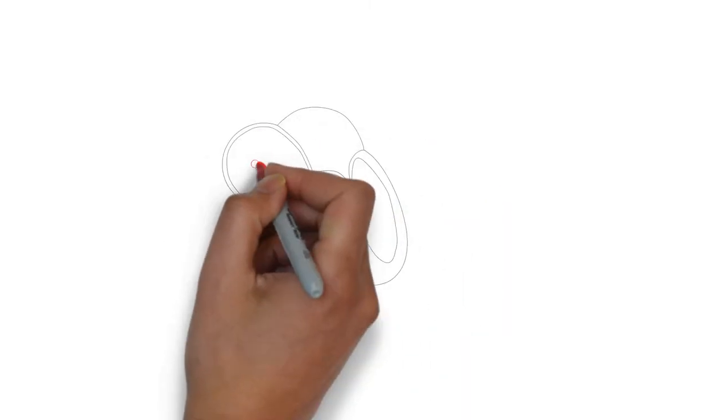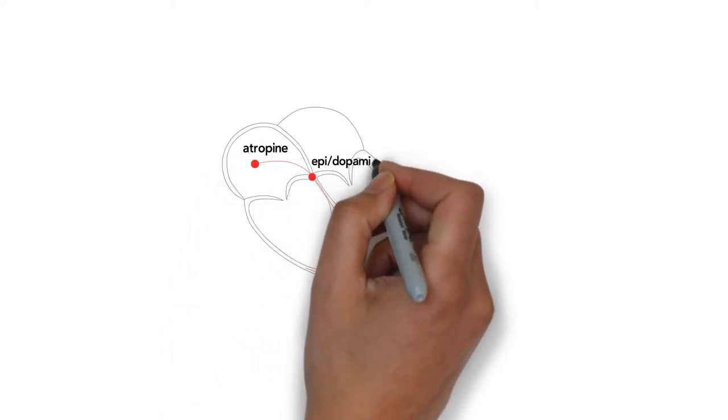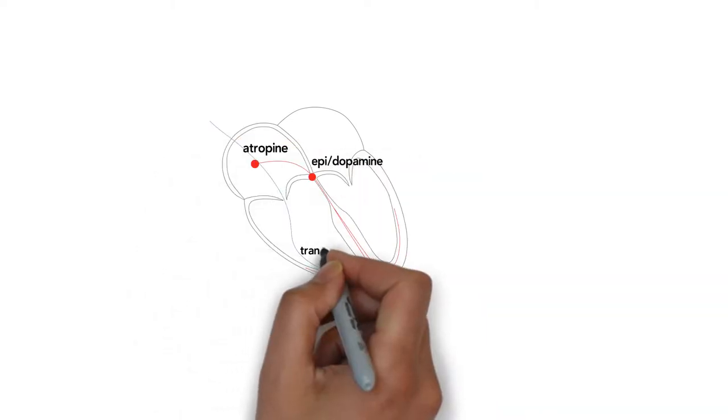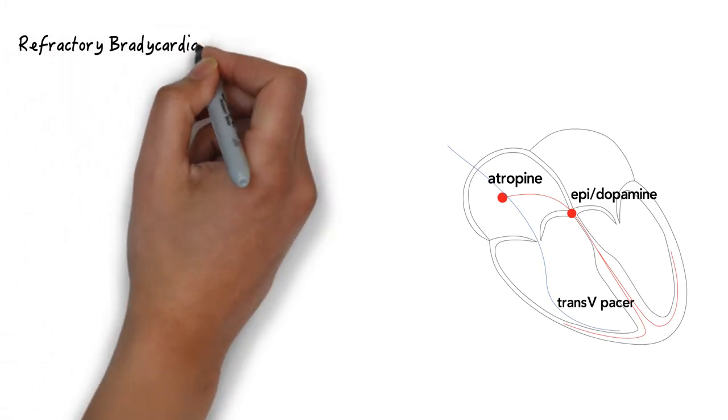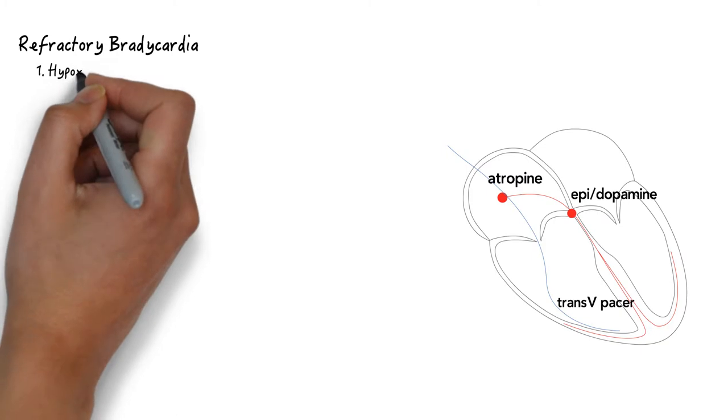Atropine and epi will work for most causes of bradycardia by stimulating the pacemaker cells at the SA node and the AV node directly. If these therapies don't work, they actually help to narrow your differential to etiologies that interrupt the heart below the AV node.